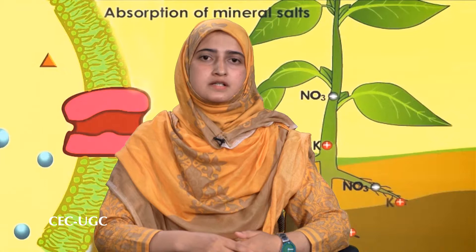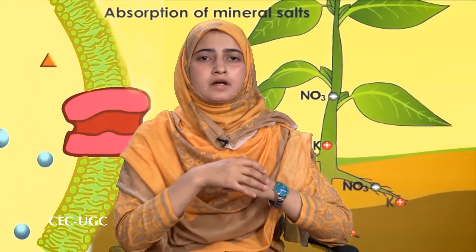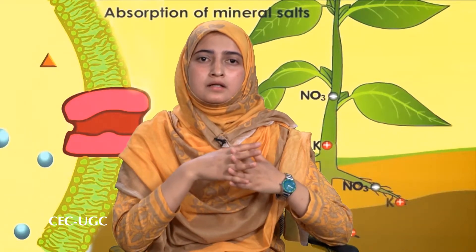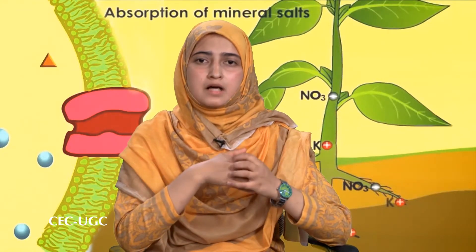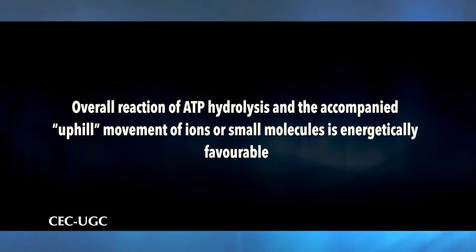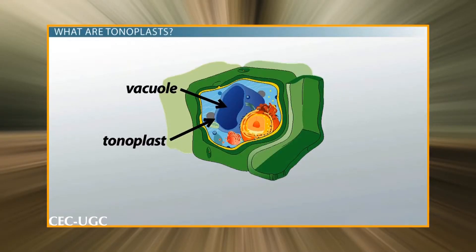ATP-powered pumps are ATPases that use energy generated from ATP hydrolysis to transport small molecules like ions across membranes against a chemical concentration gradient or electric potential. This process of active transport is an example of a coupled chemical reaction, where the energy-requiring uphill transport of ions is coupled to the hydrolysis of ATP to ADP and Pi, which releases energy. Such pumps are also known to maintain low calcium and sodium ion concentrations and generate the low pH inside plant cell vacuoles.